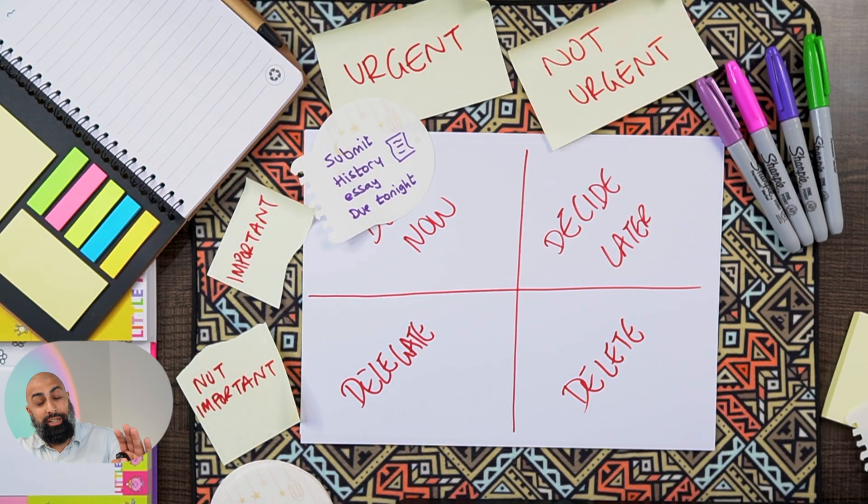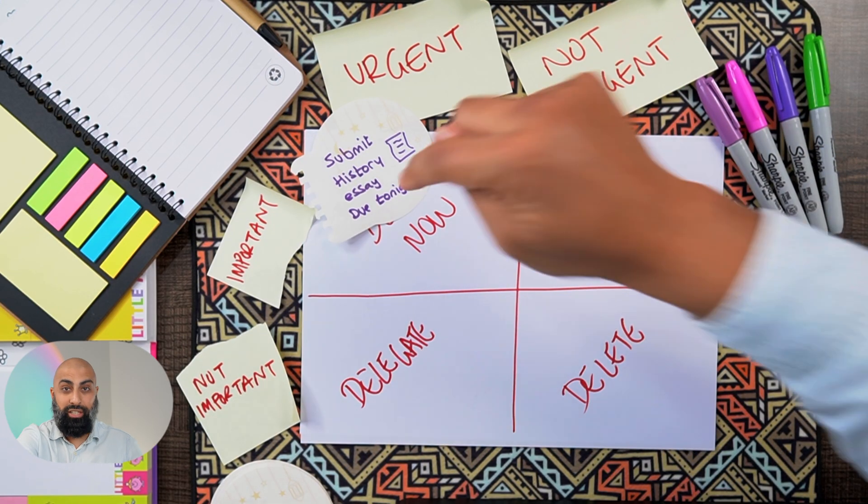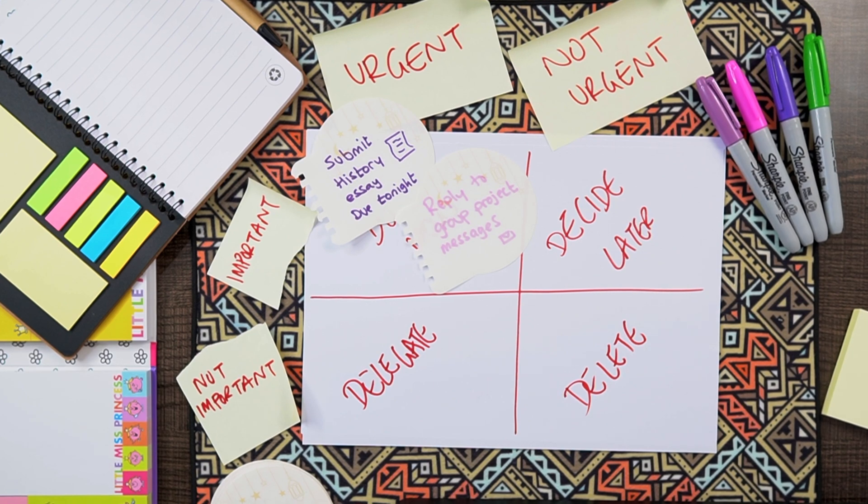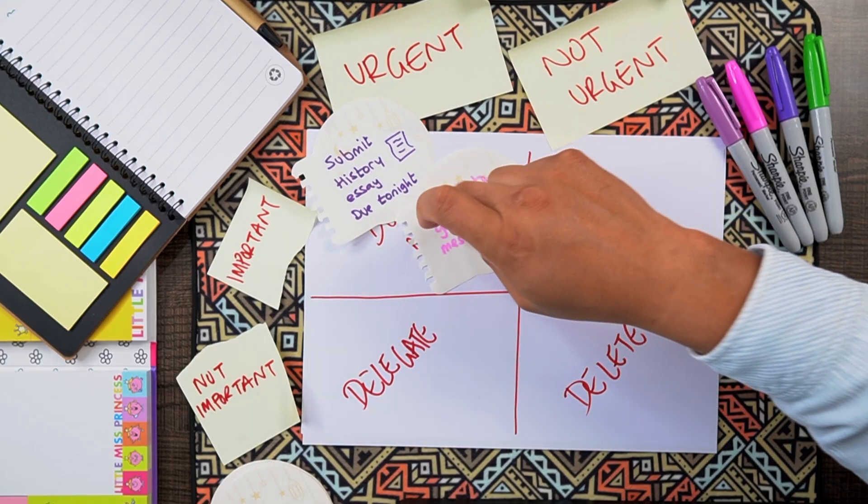Let's organize these one by one. Submit the history essay is a 'do now' task — it's due tonight, so it needs to be done ASAP. Reply to group project messages also needs to be done now because teamwork matters and delays could slow down any progress. These are your top priorities — start with these first before anything else.